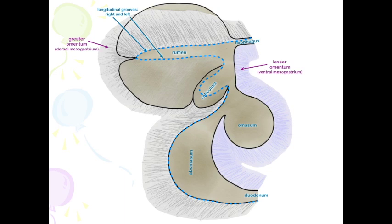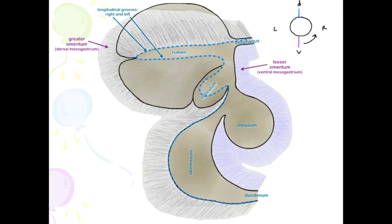I want to make a comment here about the development of the greater and lesser omentum. The foregut has both a dorsal and a ventral mesenteric attachment, unlike the rest of the gut which only has a dorsal mesenteric attachment. We call these the dorsal and ventral mesogastrium. As it develops, the ventral mesogastrium rotates to the right, becoming associated with the lesser curvature of the stomach, and the dorsal one as it rotates to the left becomes associated with the greater curvature of the stomach as well as the proximal duodenum.